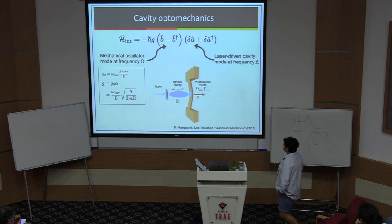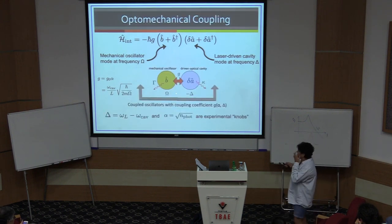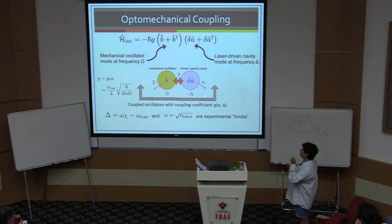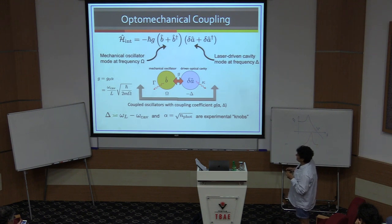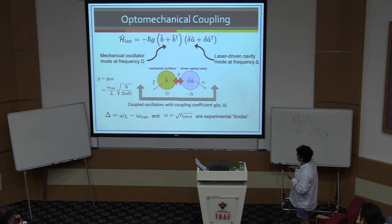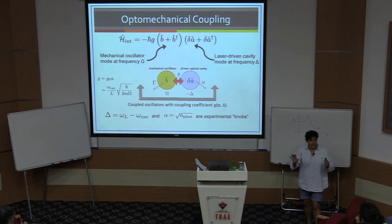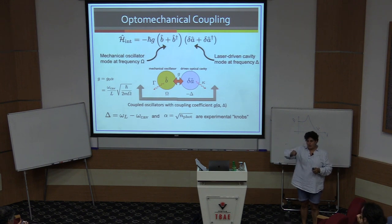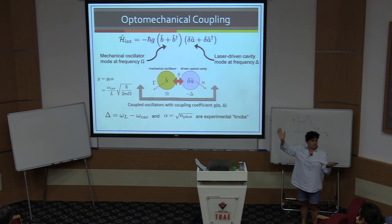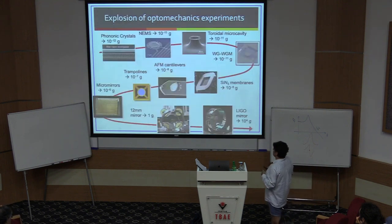With all of that put together, you get this coupled oscillator system. Experimentally, we have two knobs we like to turn. The coupling constant depends on the difference between the laser frequency and the cavity frequency — what we call the detuning — and it depends on the laser power, which is the number of photons. So we have a way of making an optomechanical system by simply dialing the power of the laser or dialing how close the laser frequency is to the cavity frequency.